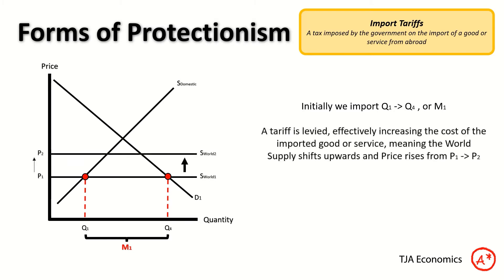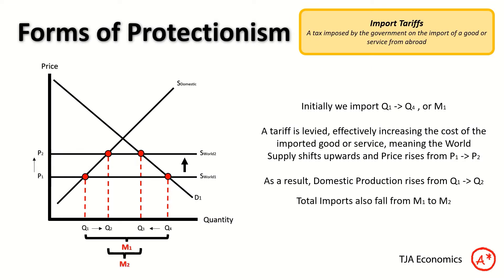We can then levy a tariff — essentially a tax — which increases the cost of the imported good or service, meaning that world supply curve shifts upwards. That means domestic production rises from Q1 to Q2. Now that the imported good or service is more expensive, more domestic producers can compete. That gap between Q1 and Q2 represents the new domestic producers. It also means overall consumption falls — Q4 drops to Q3 — so imports drop from M1 to M2. Overall, we are importing less and producing more domestically.